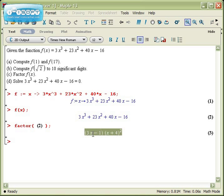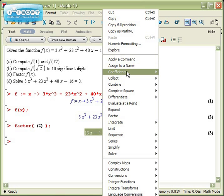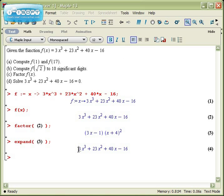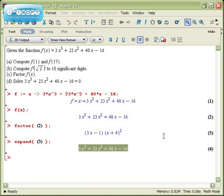I could double check that this factoring is correct by taking this and foiling it out or expanding it out. Now if I right click again, then I can actually find that expand is right there. So I click on expand, and again I get 3x cubed plus 23x squared plus 40x minus 16. So part c is answered by this. There's f(x) factored.